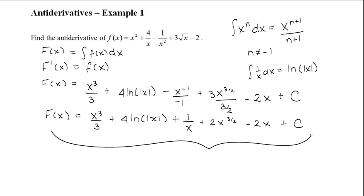This is your final answer for the antiderivative of f of x. Now let's verify it by taking the derivative of our antiderivative. When we take the derivative of x cubed over 3, we get 3x squared divided by 3, so we're left with x squared because the 3's cancel. When we take the derivative of 4 ln of the absolute value of x, the derivative of ln of absolute value x is 1 over x, so we get plus 4 times 1 over x.